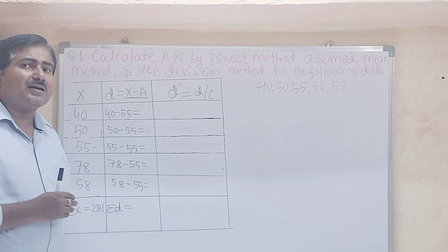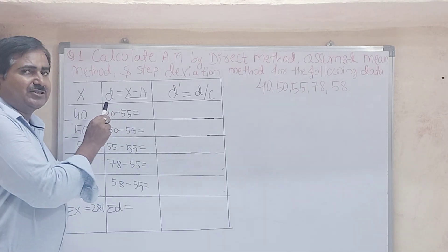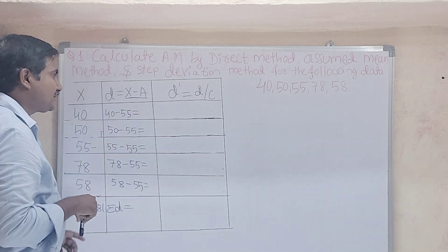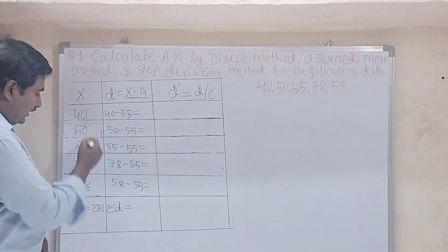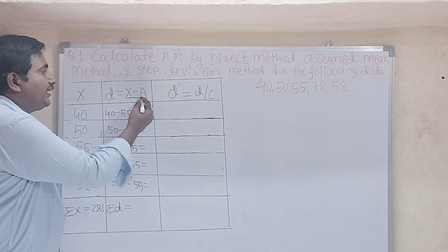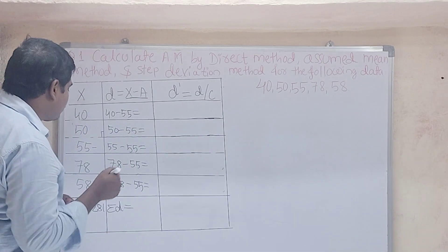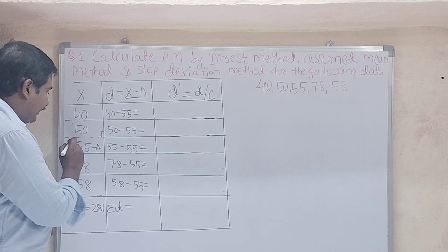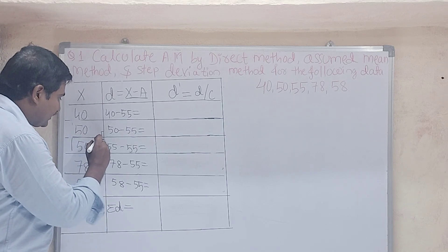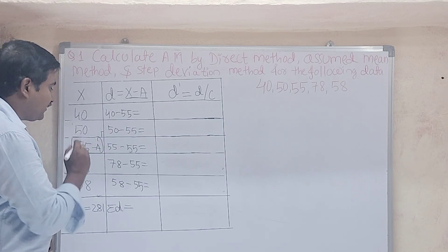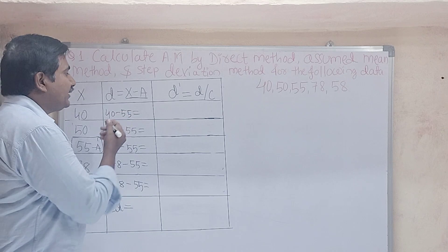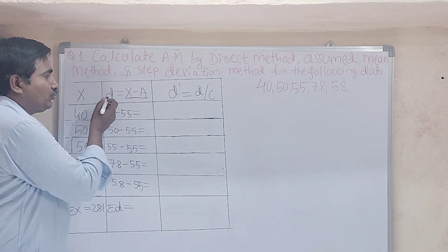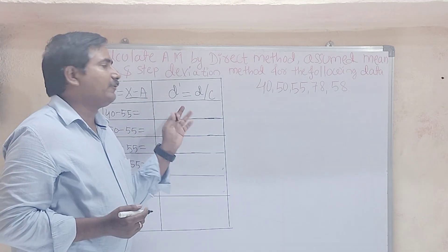The second column is the deviation column. D is equal to X minus A, where A is the assumed mean. We have taken A equal to 55. So D = X − A, and this gives us the deviation for each value.